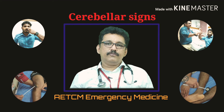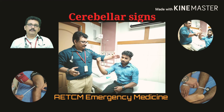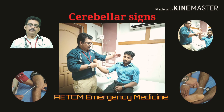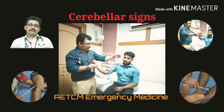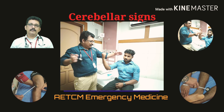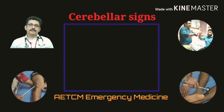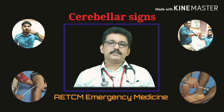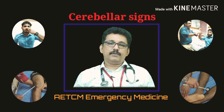The rebound phenomenon tests the check reflex. Hold the patient's forearm, ask them to flex the elbow forcefully, and suddenly release it. In a normal person, the muscles check the movement. Guard the patient's face with your other hand, because in cerebellar disorder the patient cannot control the hand and it may strike their face. Loss of the check reflex is a classical cerebellar finding.